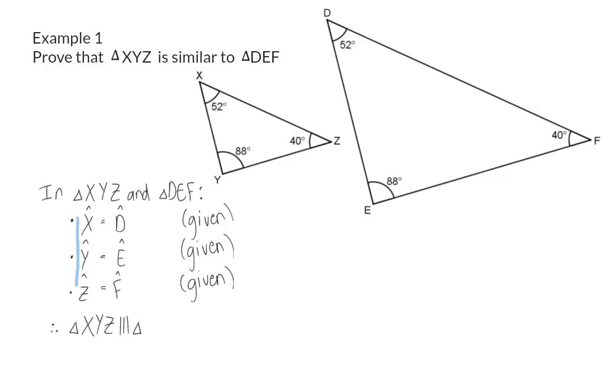So I wrote down XYZ, and I'm going to keep that order saying D, E, and F. The reason for the similarity here is angle, angle, angle.